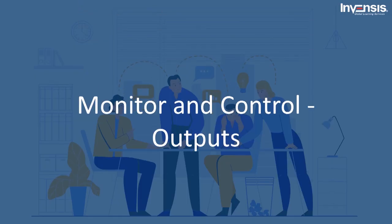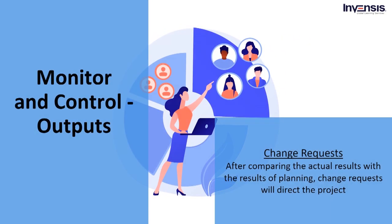In the next part of this session, we will talk about the outputs of the monitor and control process. The first output is change requests. After comparing the actual results with the planned results, the change request guides the project. You can instruct your project and product scope, quality requirements, schedules, and cost base to grow, adjust, or shrink. These changes pave the way for recording and documenting new requirements and can also affect project management plans, documents, or product performance. All changes that meet the project's change control criteria should go through the integrated change control process established for the project.